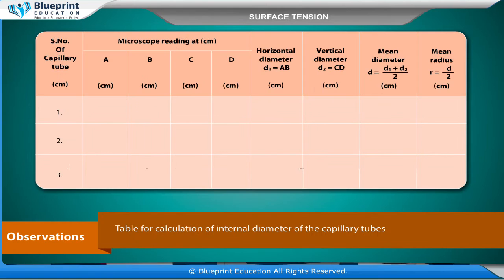Table for calculation of internal diameter of the capillary tubes, with columns for serial number, microscope readings at points A, B, C, D (cm). Horizontal diameter D1 = AB (cm), vertical diameter D2 = CD (cm), mean diameter D = (D1 + D2)/2 (cm), and mean radius R = D/2 (cm).